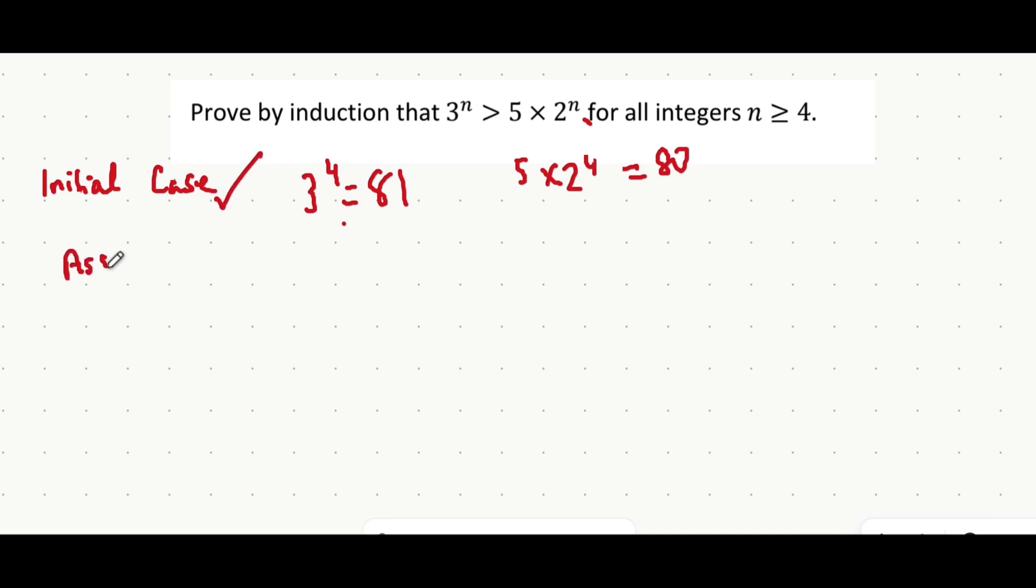Now we're going to make an inductive statement. We're going to assume that when n is equal to k, upon the same boundaries that was made before when k is bigger than or equal to 4, that 3 to the power of k is bigger than 5 multiplied by 2 to the power of k.